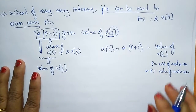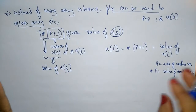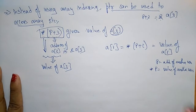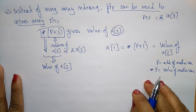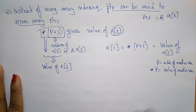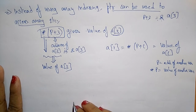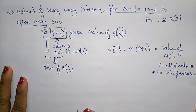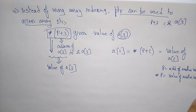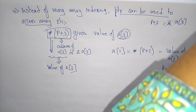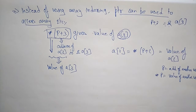To summarize the distinction: P represents the address of another variable, whereas *P represents the value of another variable.